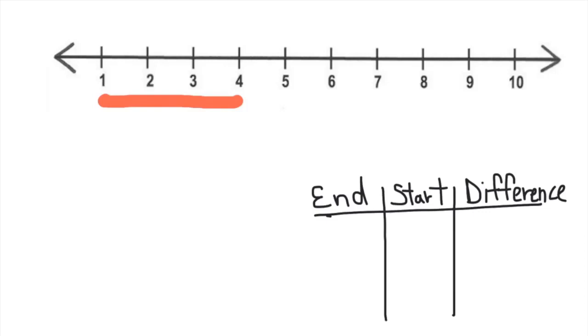So here you can see on the number line that the ending point is at 4, the starting point is at 1, and what is the difference or the distance between 1 and 4? We can see that it's 1, 2, 3. So the difference between those two points is 3.